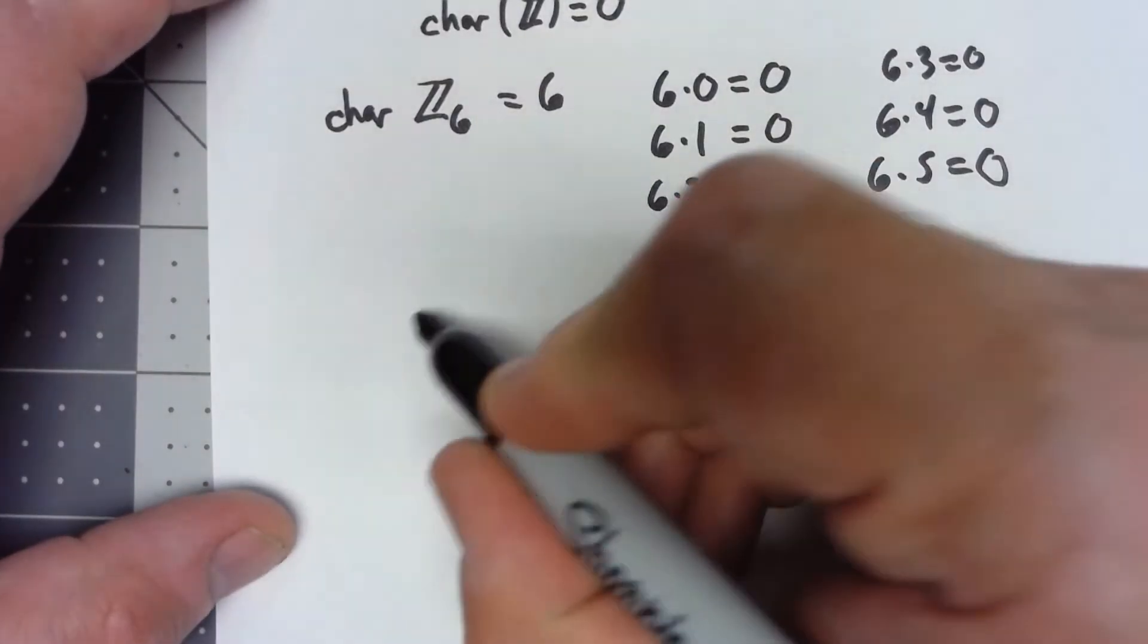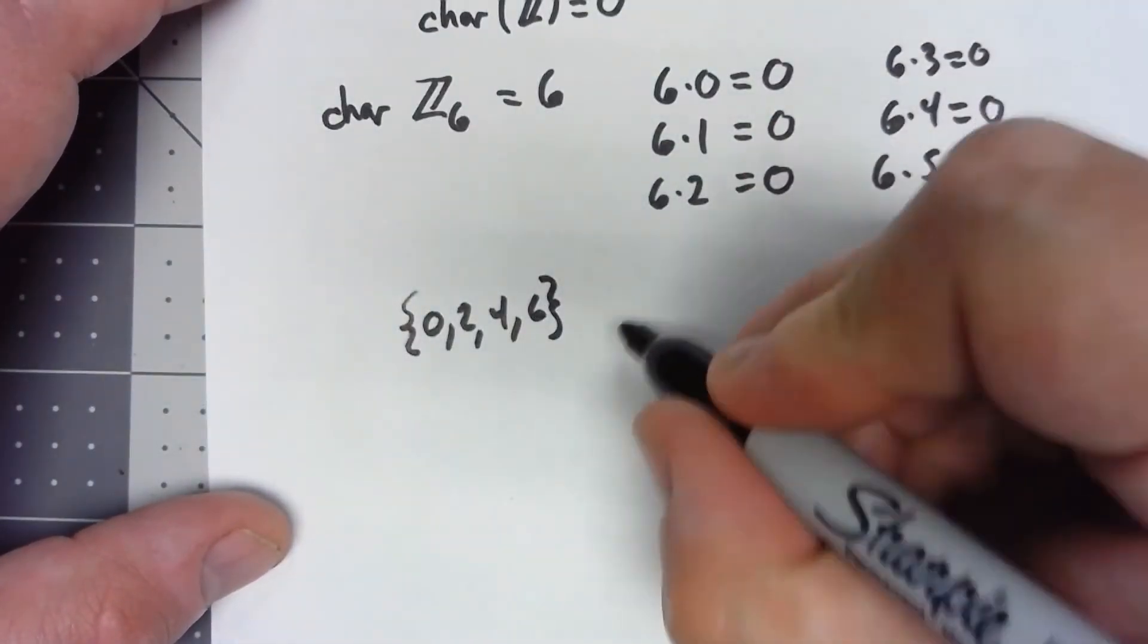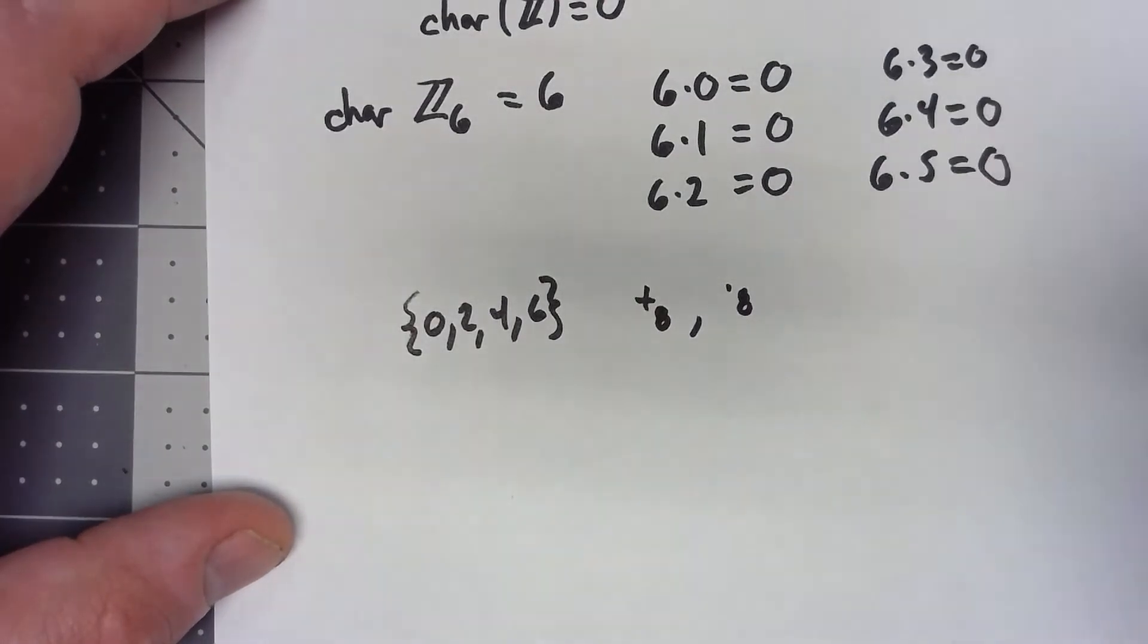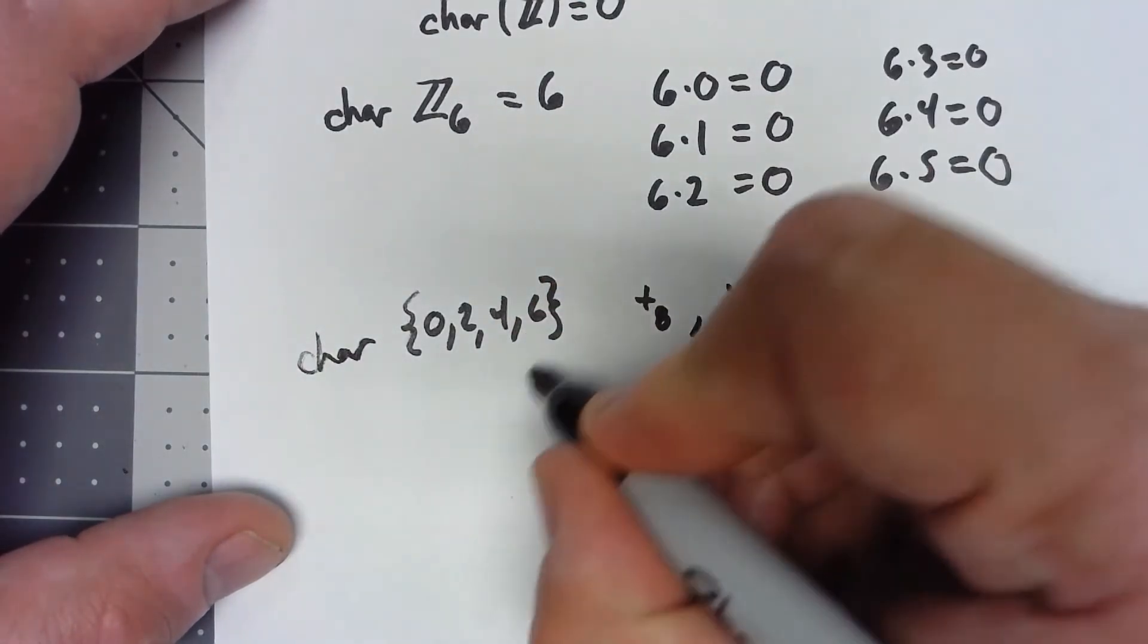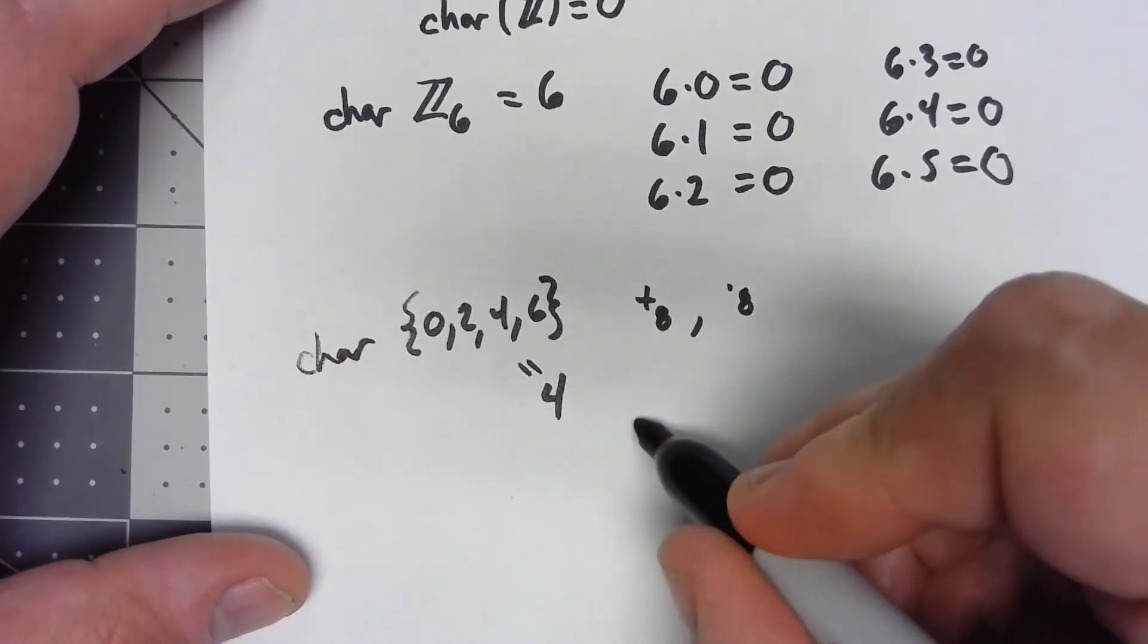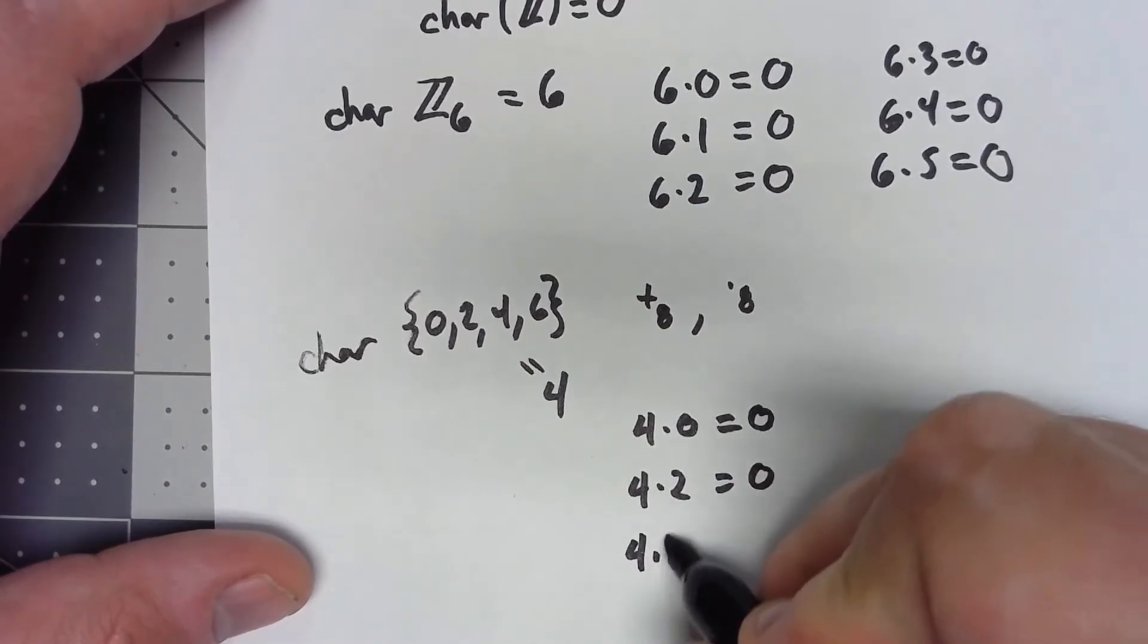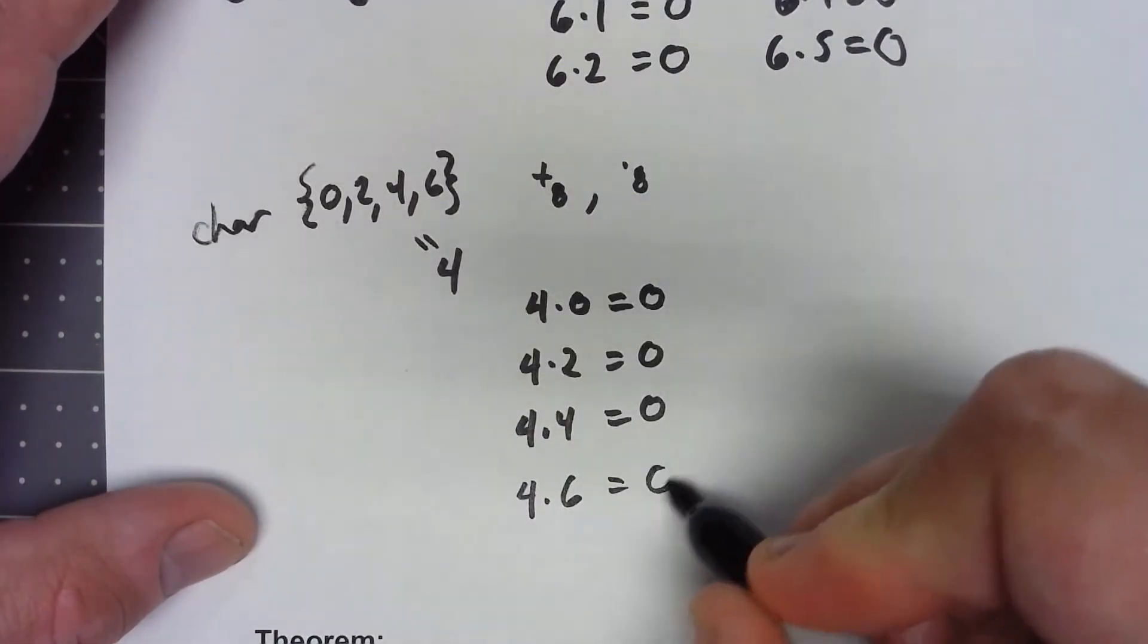One more example: let's look at the set {0, 2, 4, 6}, where again addition and multiplication are both done mod 8. In this case, the characteristic of that ring is 4. Similar kind of thing: 4 times 0 is of course equal to 0, 4 times 2 is 8 which mod 8 is 0, 4 times 4 is 16 mod 8 is 0, and 4 times 6 is 24 mod 8 is 0.